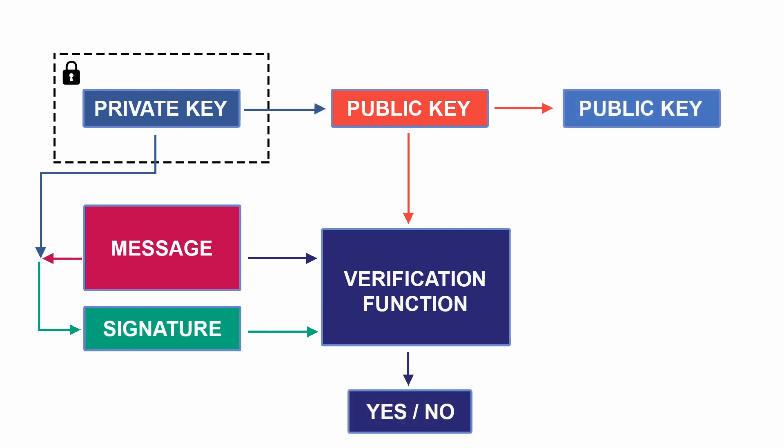A Bitcoin address is derived from the public key, and here SHA256 hash function is used to derive it. SHA256 is a one-way function, so you cannot go back from Bitcoin address to the public key — you can only go from public key to Bitcoin address. SHA256 has other features we learned: deterministic, fast computation, and less chance of collision. So a unique public key will always generate the same Bitcoin address.